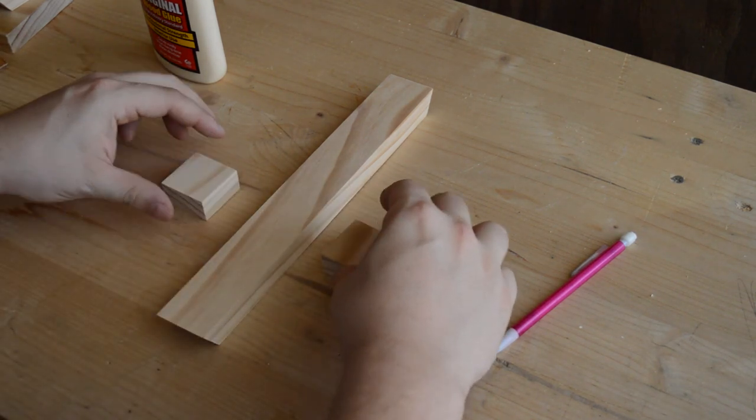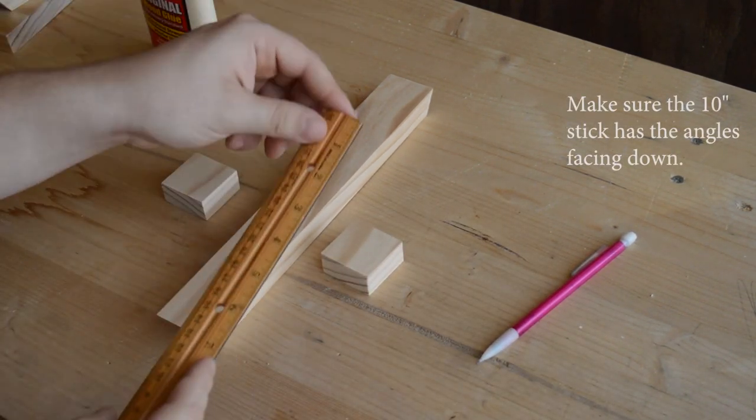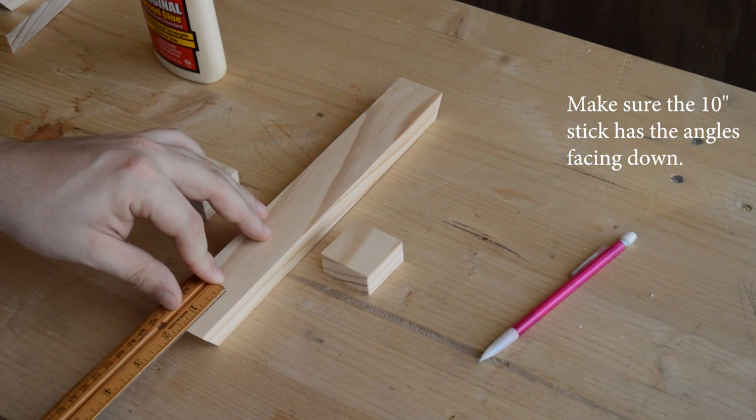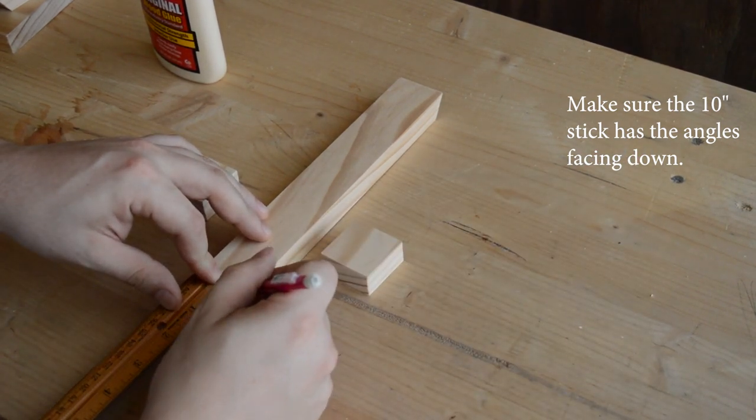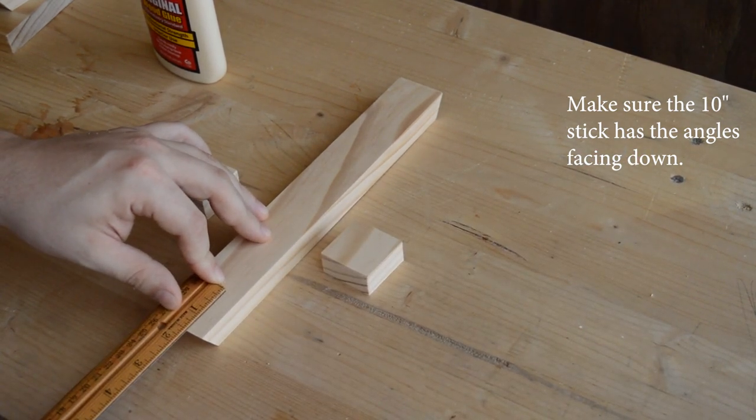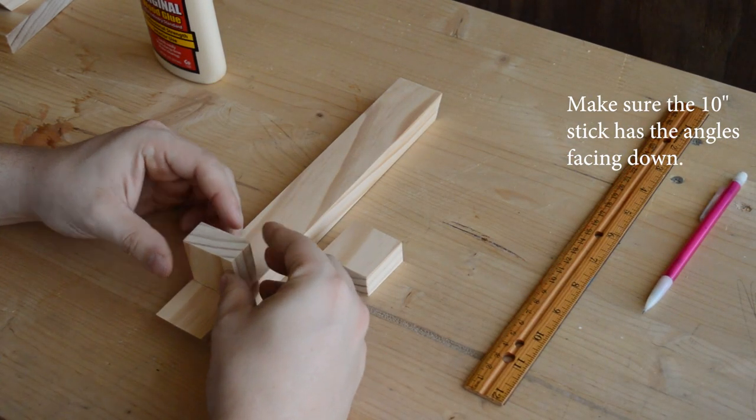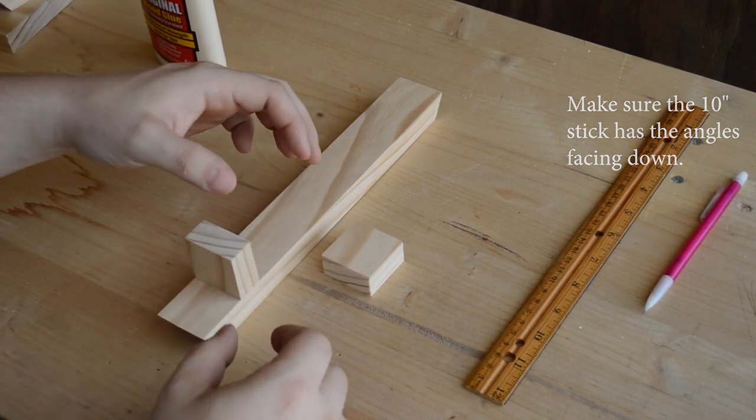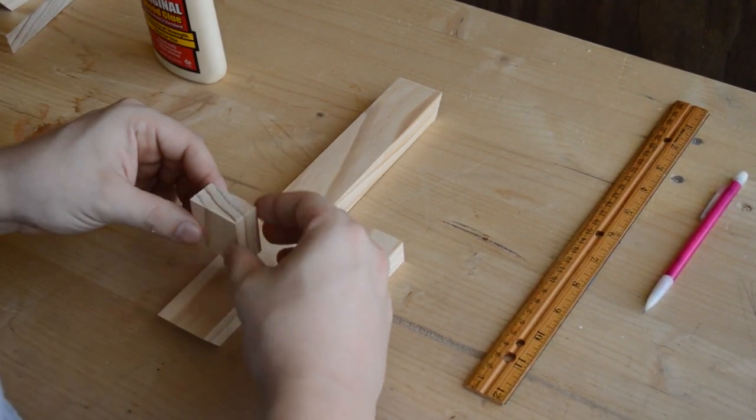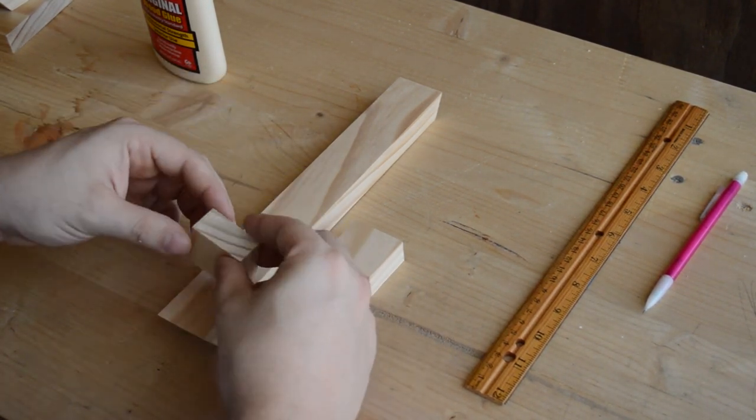Putting everything together is by far the most challenging. We're going to start by attaching the two one and a half inch pieces to the 10-inch stick. Measure one and a half inches from the bottom and make a mark. Then grab one of your pieces and try to align it so you can have an idea of where it's going to go. Sometimes it aligns better on the other side, so play with the pieces.